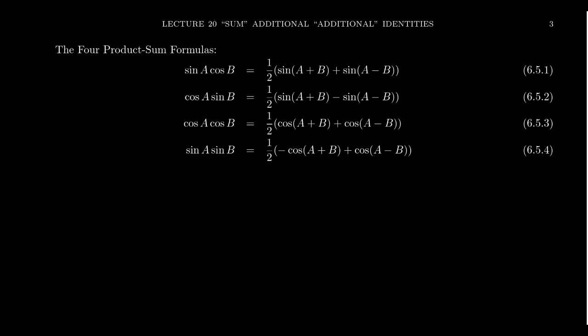So where do these things come from? This is going to be a little unorthodox way of proving trigonometric identities, but what we're going to do is completely valid. We're basically going to combine the angle sum and angle difference identities for sine and cosine in a cool way to create these identities. Let's first look at sine of A times cosine of B. We're going to take the angle sum identity for sine.